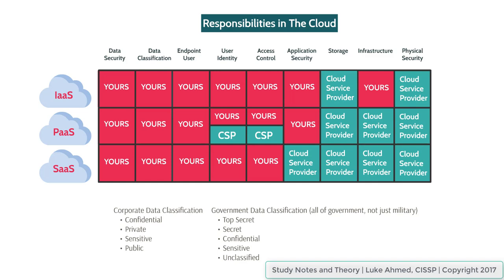Access control is essentially the same thing as user identity. The identity has to be allowed access somewhere, so you need some form of access control. The cloud service provider does their part of access control by allowing you access to the platform as a service in the first place. Then you, as a systems administrator, put in access control mechanisms for other users within your own organization. In that aspect, you share the responsibility with the cloud service provider in a platform as a service.